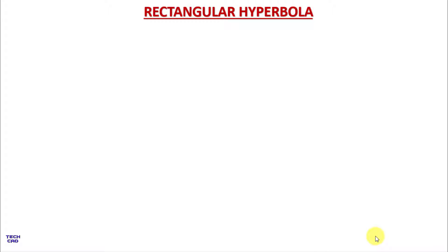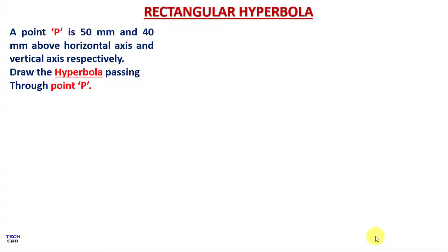Hello everyone. In this video we are going to understand how to draw the rectangular hyperbola. The question is: a point P is 50 mm above the horizontal axis and 40 mm above the vertical axis, and we need to draw the hyperbola passing through point P. This is the vertical axis and this is the horizontal axis.